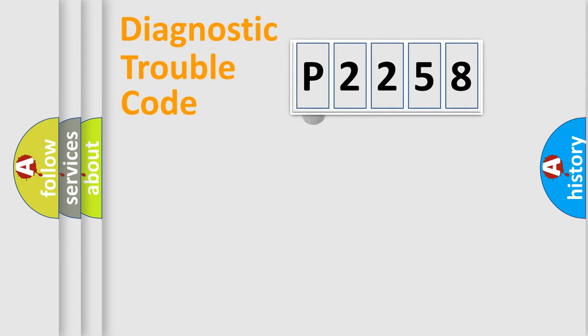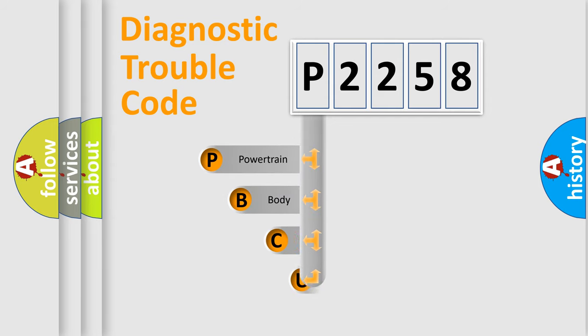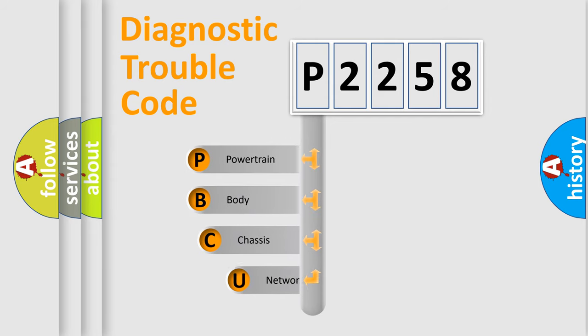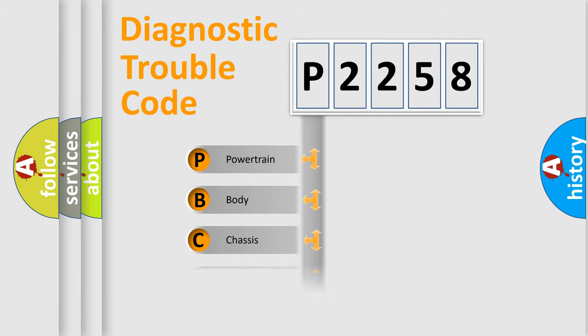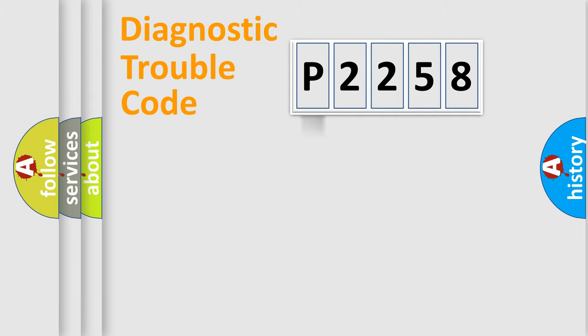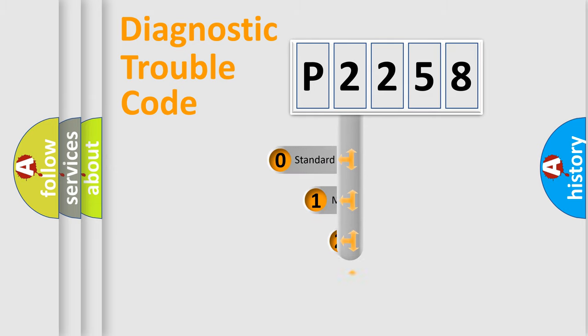First, let's look at the history of diagnostic fault code composition according to the OBD2 protocol. We divide the electric system of an automobile into four basic units: powertrain, body, chassis, and network. This distribution is defined in the first character of the code.